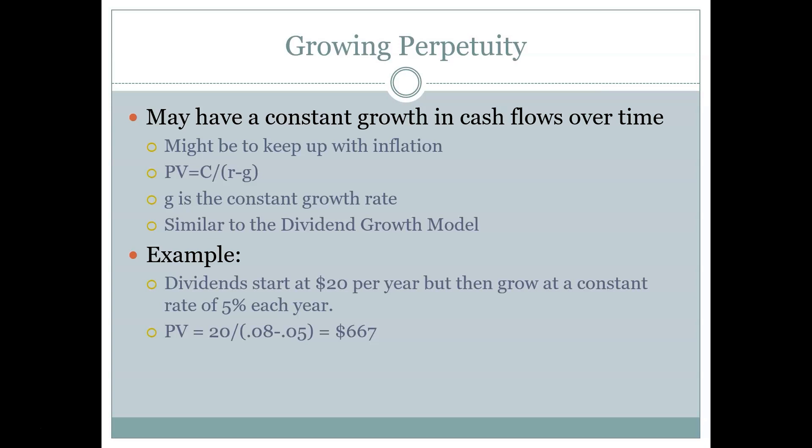There is a way to adjust the perpetuity model so that we don't have to have completely level cash flows — we can have a special case called a growing perpetuity. The growing perpetuity means we can grow the cash flows at a steady rate. So instead of level cash flows, we have a level growth rate. For example, the cash flow starts at a dollar and then grows at 10% every year forever. This is a more accurate representation of some financial instruments, and when we talk about stocks, we'll come back to this formula.